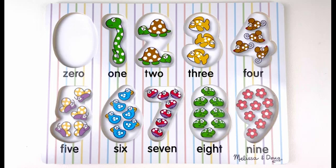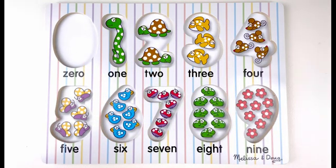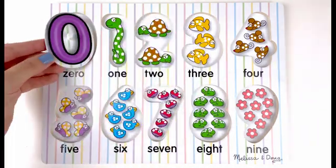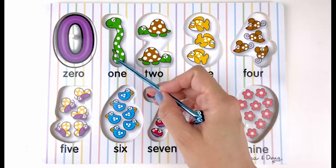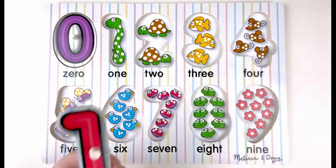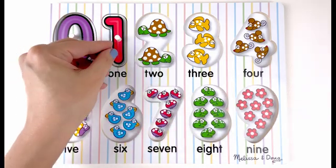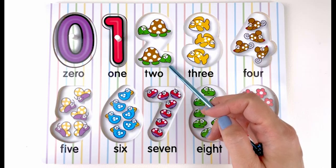Hi friends, let's learn about numbers and counting together. What do you see here? Nothing. Yep, that's right — nothing means number zero. What do you see here? I see one snake. Number one. How many turtles do you see here?